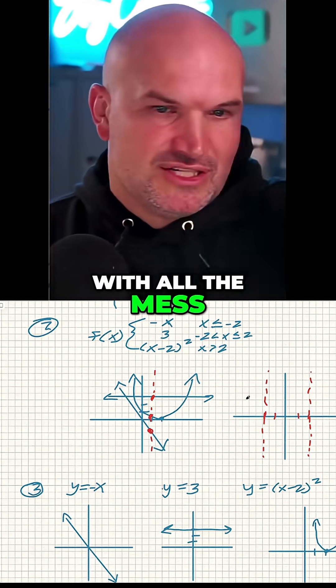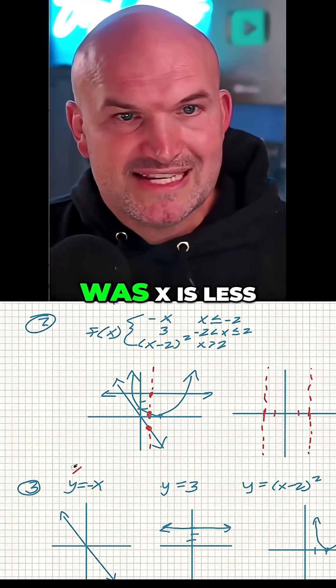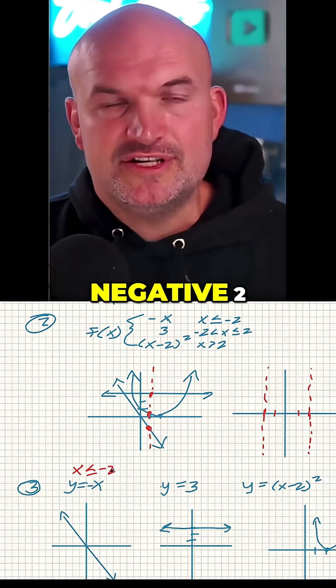Did not get involved with all the mess. Just identify the restrictions and put them on the graph. Now again, the restriction for this was x is less than or equal to negative two.